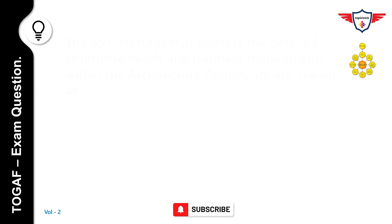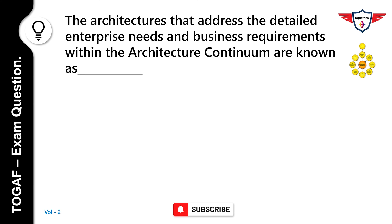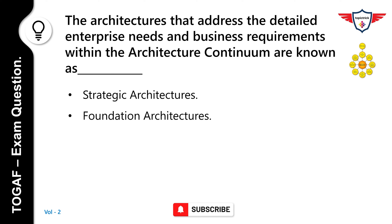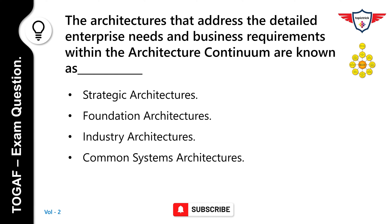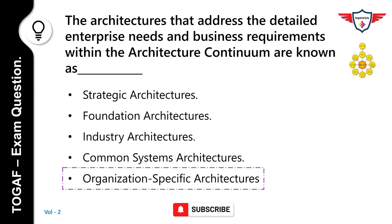The architectures that address the detailed enterprise needs and business requirements within the architecture continuum are known as which of the following? Options: Strategic Architectures, Foundation Architectures, Industry Architectures, Common Systems Architectures, Organization Specific Architectures. The correct answer is Organization Specific Architectures. The arrows in the leftward direction focus on meeting enterprise needs and business requirements, which are addressed in increasing detail from left to right.